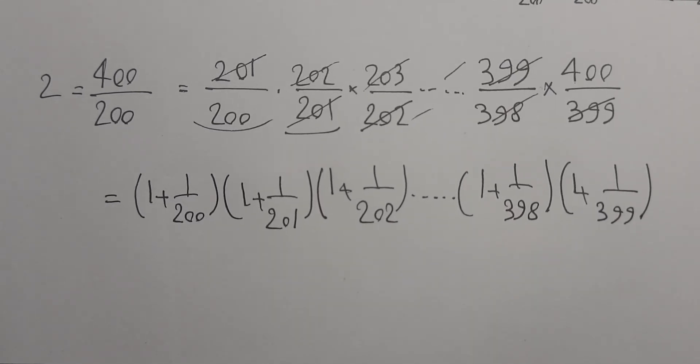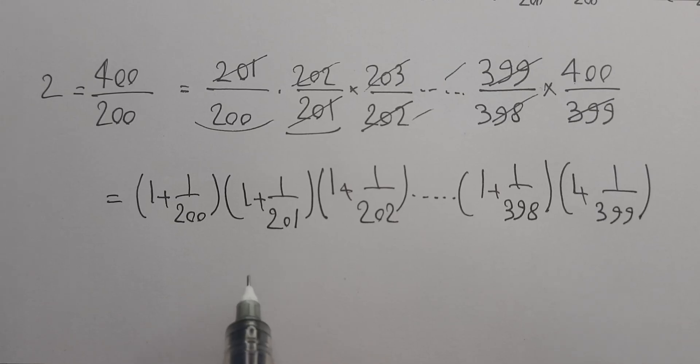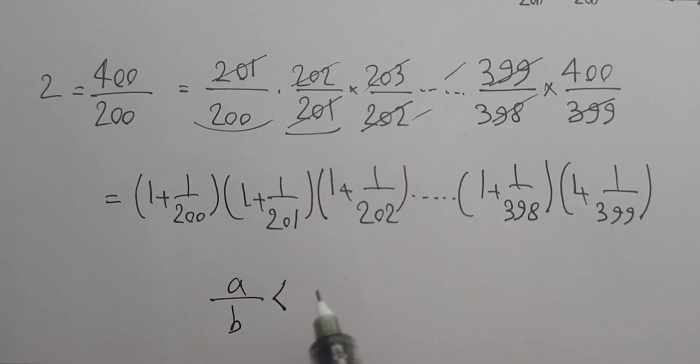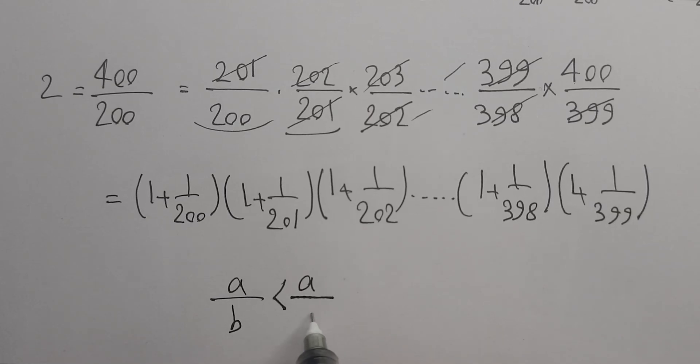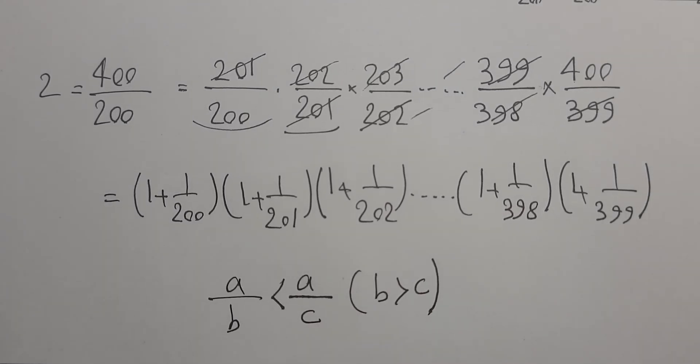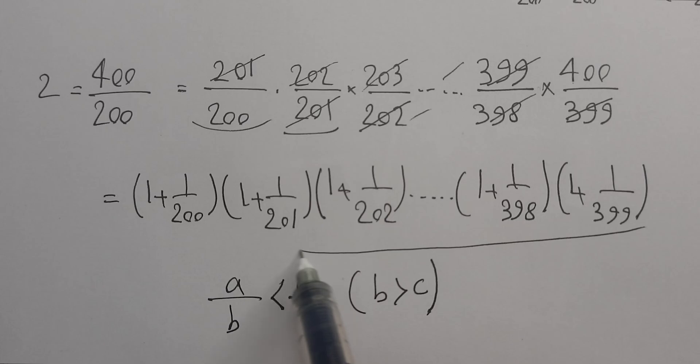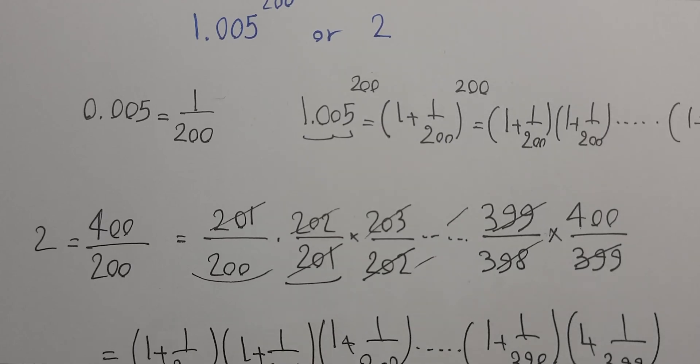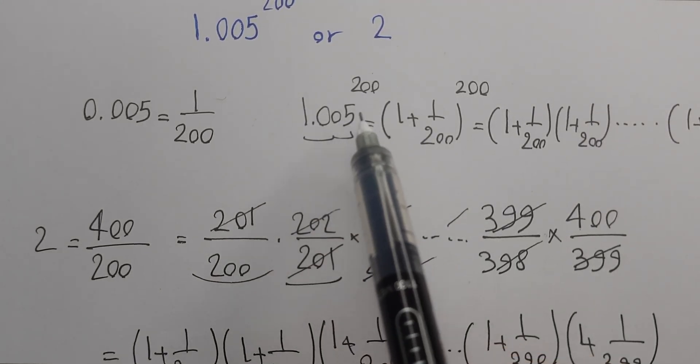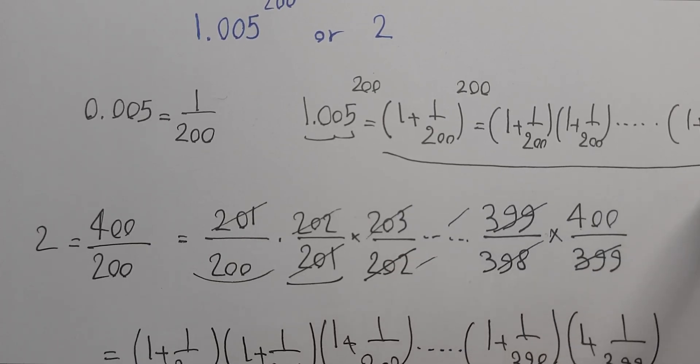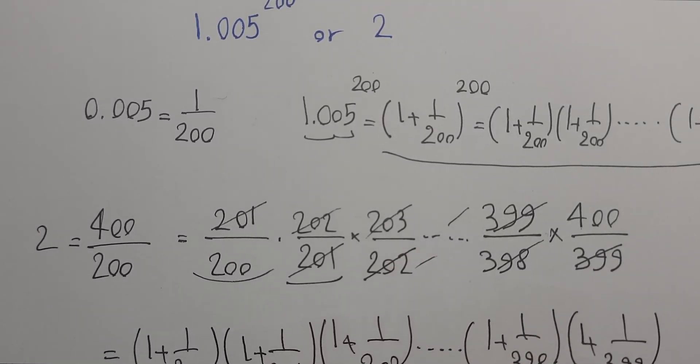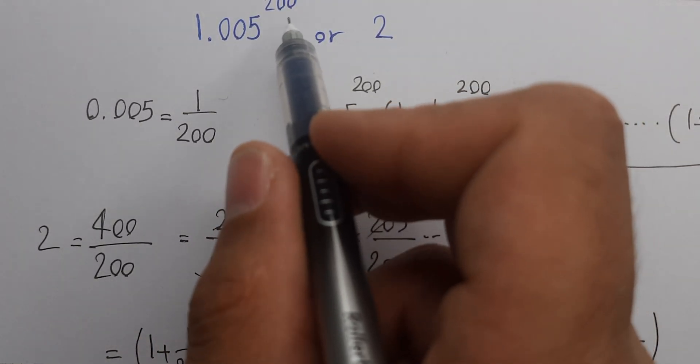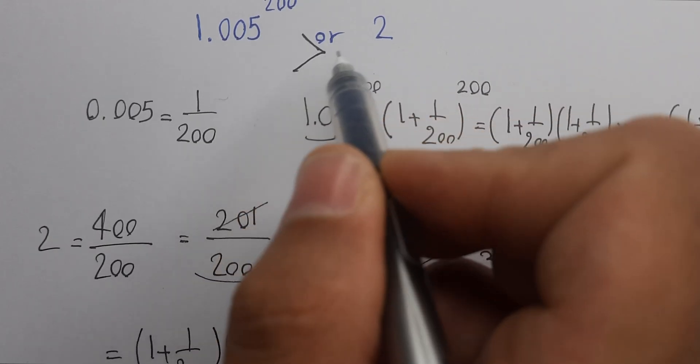As you see, 2 is here, and 1.005^200 is this. According to that, 1.005^200 is larger than 2.